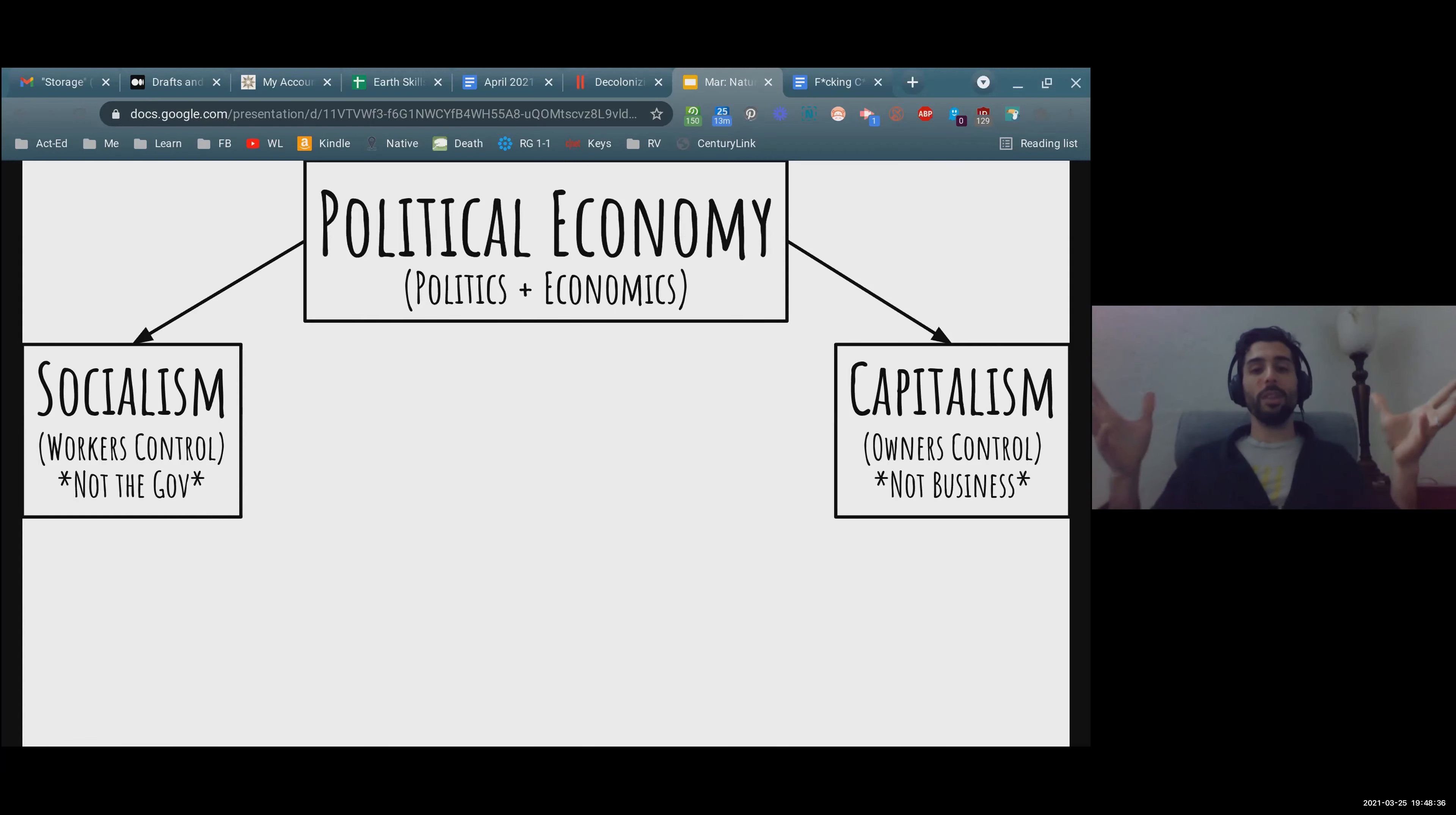One just real obvious, straightforward example of that is that a relationship between an employer and an employee is always based on a contract. And when there is a violation of that contract, then either person can call on the state to help enforce that contract. And depending on what kind of political economy you are in, that state will have a friendlier relationship to either the employer or the employee. And that brings us to what kinds of political economy are there. The two big ones are socialism and capitalism.